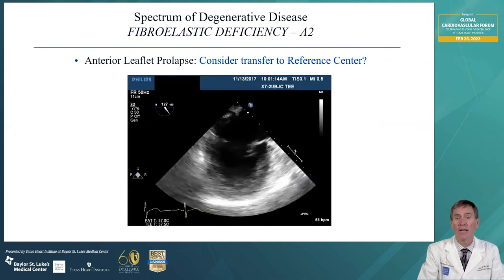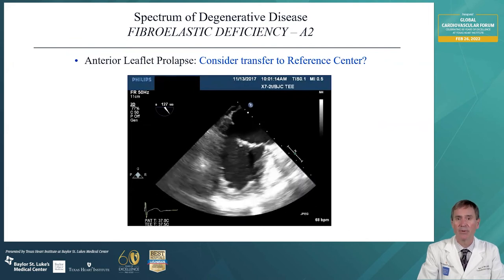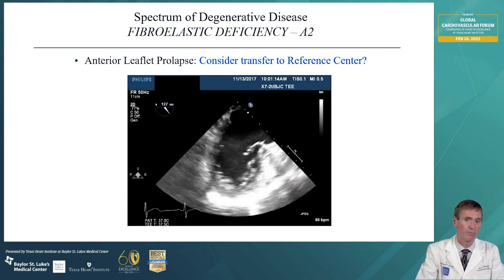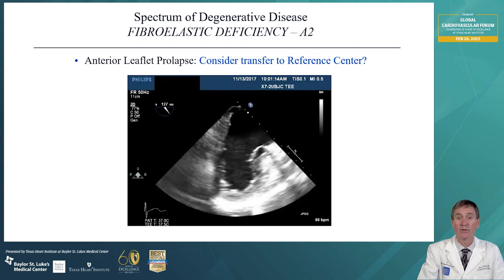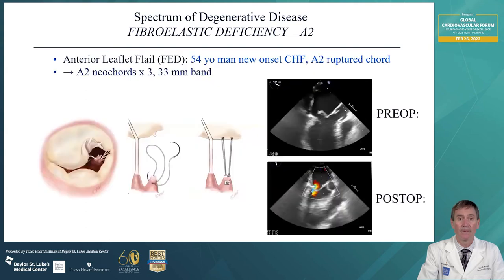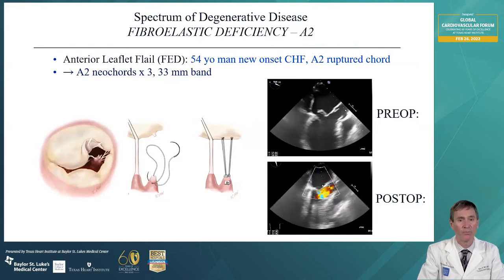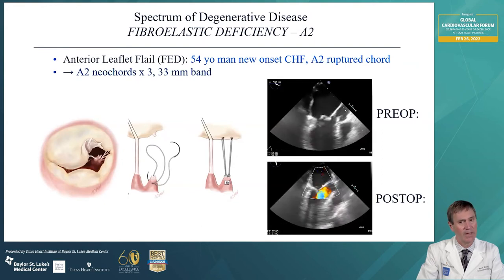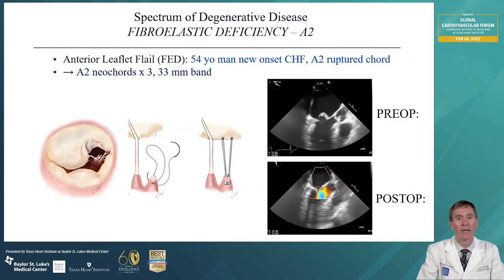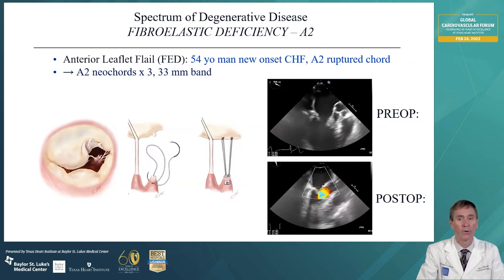Here's anterior leaflet prolapse — this is a bit more complex and the kind of patient that a surgeon not comfortable with mitral valve repair would consider transferring to a reference center. Here's a 54-year-old gentleman with new-onset congestive heart failure and a ruptured cord in the anterior leaflet at A2. What we did was create an A2 neocord — we put three of these through the papillary muscle and then through the coaptation edge of the anterior leaflet where we wanted the valve to coapt. We did not have to downsize extensively and had no regurgitation after repair.